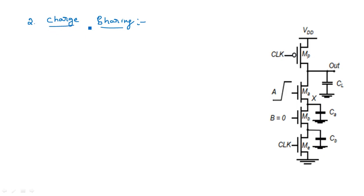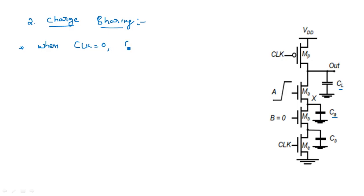Charge sharing: suppose there are three capacitors — one is the load capacitor CL which is the actual output load capacitor, and two more are internal capacitors CA and CB. CA is the capacitor across transistor MA and CB is the capacitor across the evaluation transistor ME. Now assume initially the clock equals 0, which means CL charges — this is the pre-charging phase.